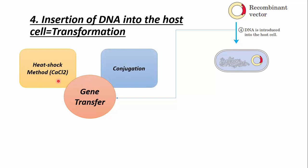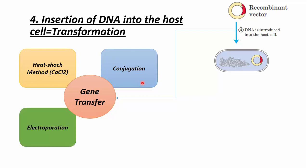The second method is conjugation, which is a natural microbial recombination process where plasmid DNA is transferred from one cell to another. The third method is electroporation, where high-voltage electric pulses induce the cell plasma membrane to fuse. DNA can also be directly transferred into the nucleus by microinjection or particle bombardment.